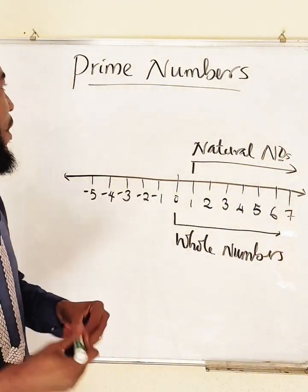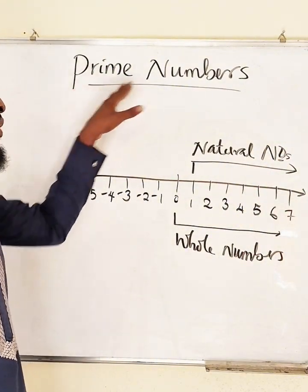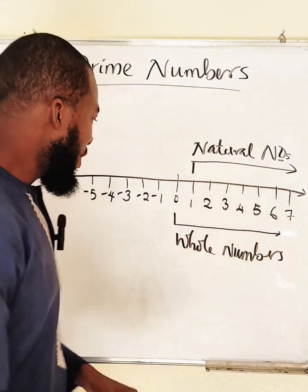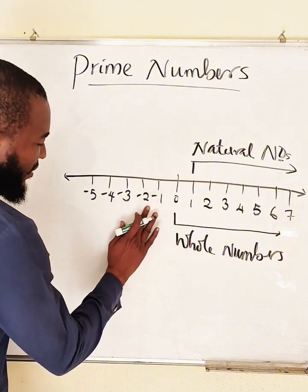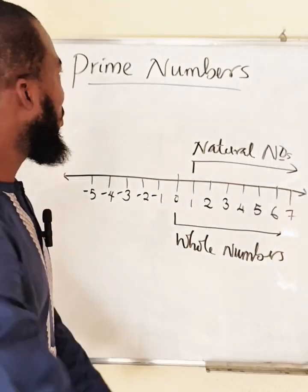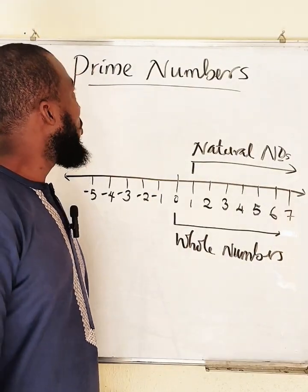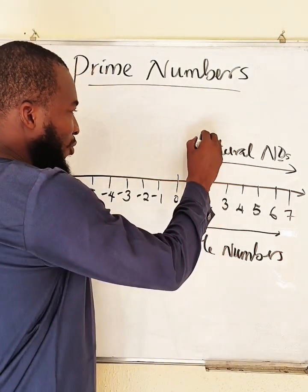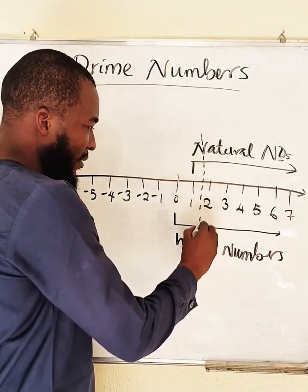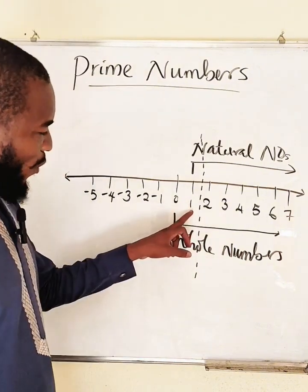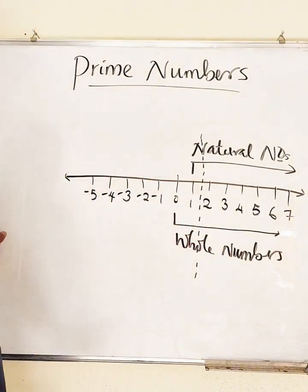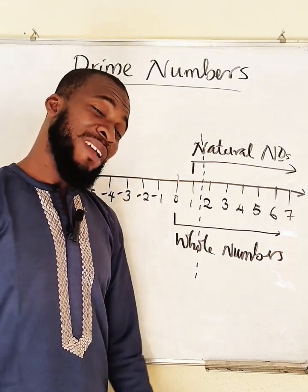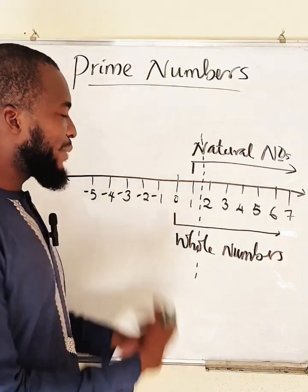You should know that prime numbers fall under natural numbers overall. Therefore, we don't want these negative numbers — that's number one. Secondly, you should know that all prime numbers are greater than one. So from one and anything to the left-hand side cannot be prime numbers. We have not started defining prime numbers yet; we're only explaining.